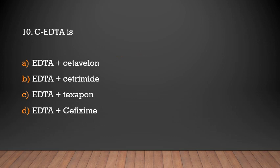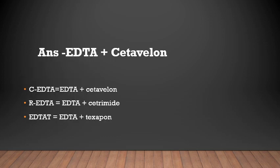Say EDTA variants: EDTA-C contains EDTA plus cetylpyridinium; EDTA-T contains EDTA plus Tween 80 (taxupon). The different EDTA formulations include EDTA plus cetylpyridinium and EDTA plus surfactant combinations.